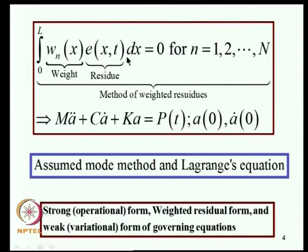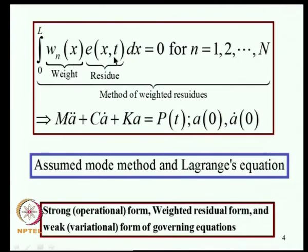This format is known as the weighted residual statement for the given problem; the original PDE is called the strong form. In the so-called weak formulation we want to weaken the continuity demand on the trial function and pass some of that to the weight function. This is achieved by integrating by parts, so continuity requirements on trial functions come down while on the weight function they go up, and requirements are shared equally between the two - that approach is known as the weak formulation of the governing equations.